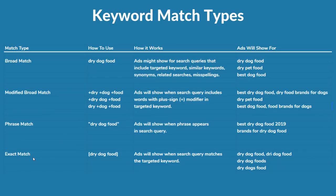Exact match is really the easiest to understand. You type in an exact match keyword and it's going to match for any keyword that is exactly the same or a close variant. When targeting phrase match keywords you put quotes around those keywords, and when targeting exact match keywords you put brackets around them. For modified broad match, you include the plus sign in front of every word you want included in the search query for your advertisements to show.